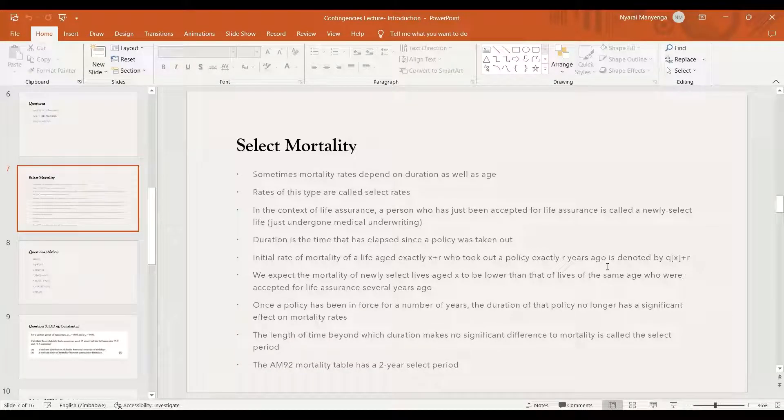The initial rate of mortality of a life aged x plus r who took out a policy exactly r years ago is denoted by q[x]+r, where the brackets just mean that it's a select life. Generally we expect that the mortality for these select lives is lower than lives of the same age who have been accepted for a life assurance policy several years ago. This is because they would have undergone medical underwriting.